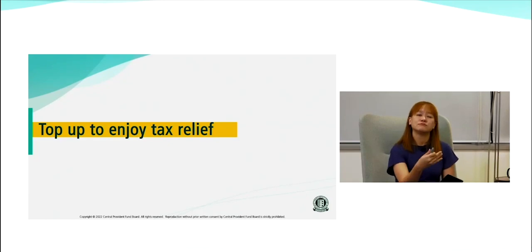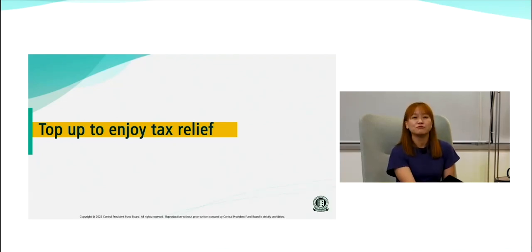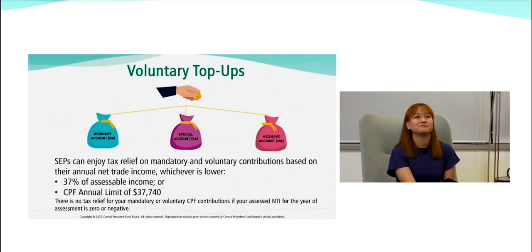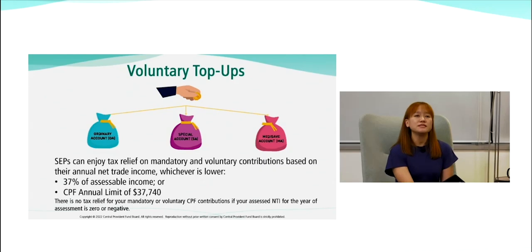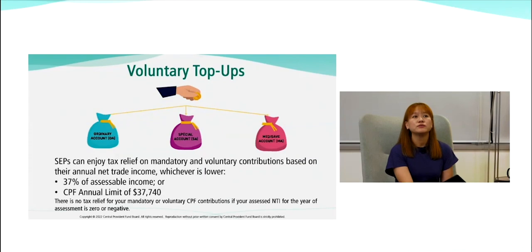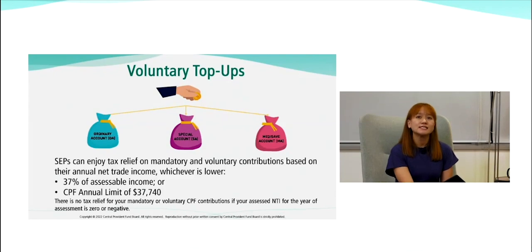You can also choose to top up to grow your CPF savings. For SEPs, you can make voluntary top-ups, which go into your OA, SA, and MA. SEPs can enjoy tax relief on both mandatory and voluntary contributions. The limit is either up to 37% of assessable income, or up to the CPF annual limit of $37,740, whichever is lower. Note that there's no tax relief if your assessed NTI for the year is zero or negative.